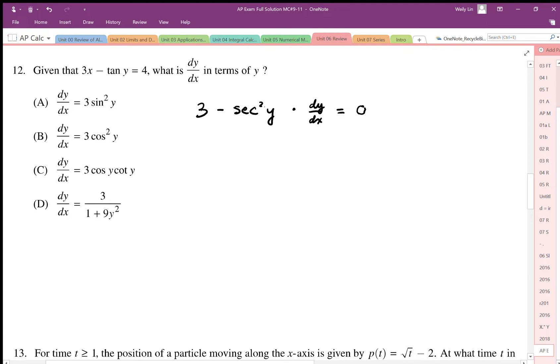That's equal to, and I have to differentiate the other side of the equation, equal to 0. So now I can isolate my dy by dx. I end up with 3 is equal to positive secant squared y times dy by dx.